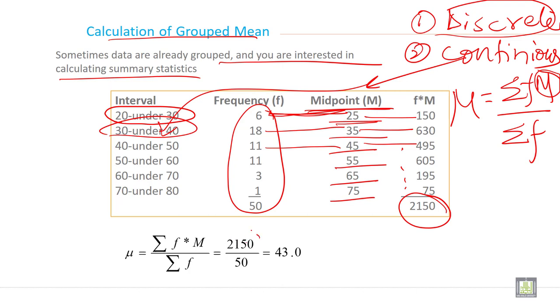2150 is your sigma fm and your sigma f is 50. When you solve this, you will get 43.0. So 43.0 will become the mean of the grouped data.